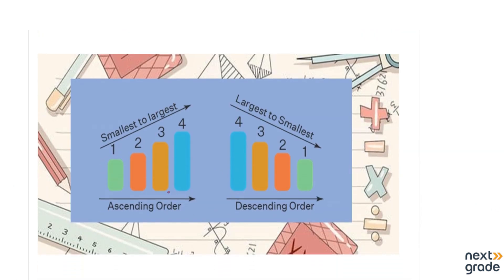There are two types of sequences we can use to order numbers. The first one is ascending order. Ascending order means that you have to arrange the numbers from smallest to largest.